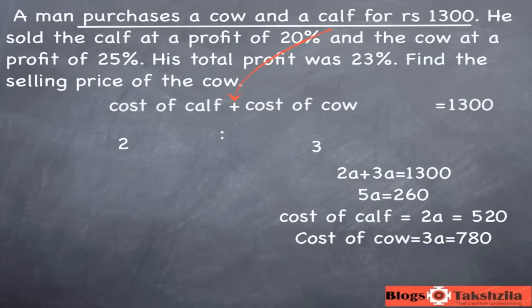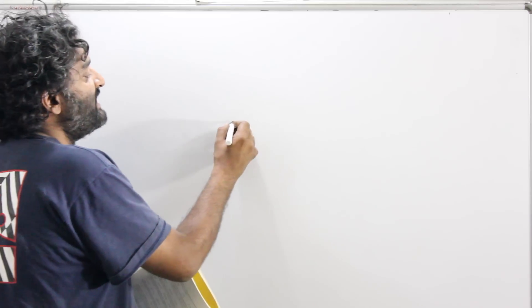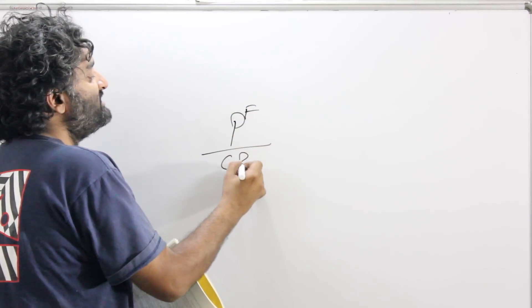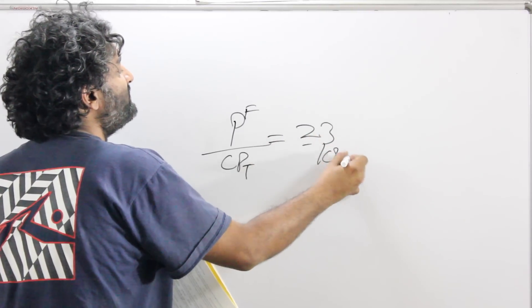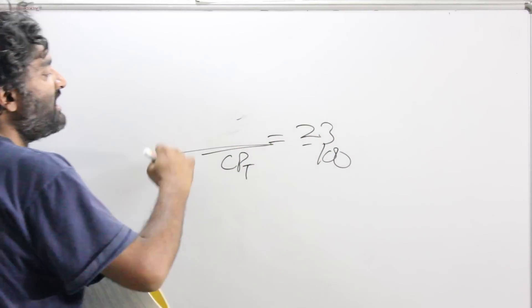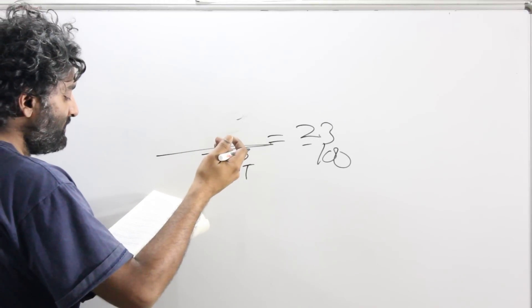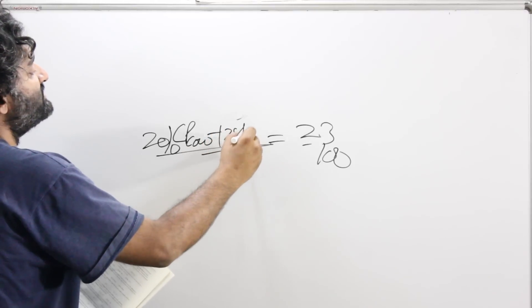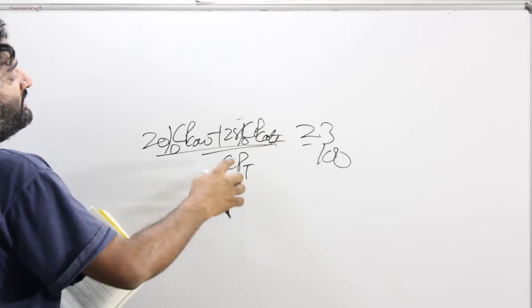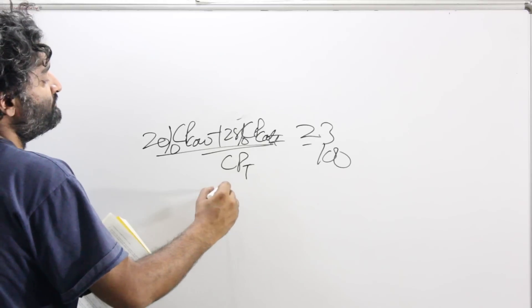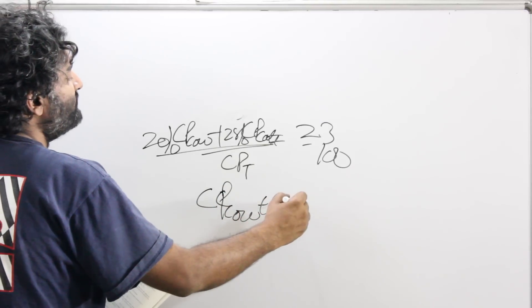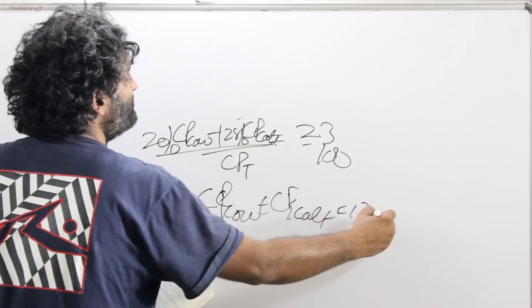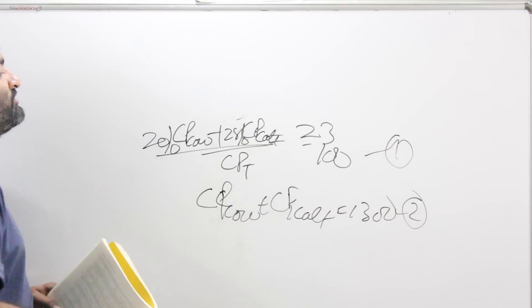The ratio of weight 1 and weight 2 is 2 is to 3. So 2x plus 3x equals 1300, giving 5x equals 1300. You can work it out to get the cost price of the calf and the cow. For the alternate approach: his total profit was 23%, meaning final profit over total cost price equals 23 by 100. Final profit equals profit on the cow plus profit on the calf — 20% of CP of the cow plus 25% of CP of the calf.